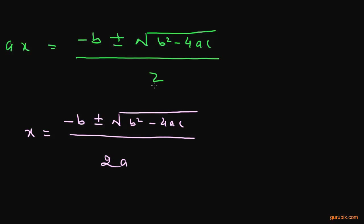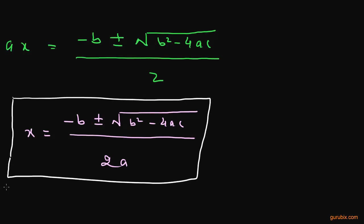If we multiply A with 2, we get the quadratic formula. This is the quadratic formula. We can solve any quadratic equation using this formula, where A, B, and C are the coefficients of our quadratic equation. We shall get two values of x by taking once the plus sign and once the negative sign.